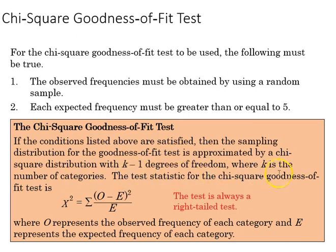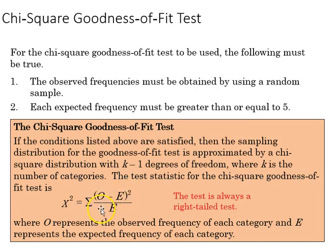The test statistic for the chi-square goodness of fit test is: chi-square equals the sum of the observed minus expected, squared, divided by the expected. It's always a right-tailed test, where O represents the observed and E is the expected frequency for each category.